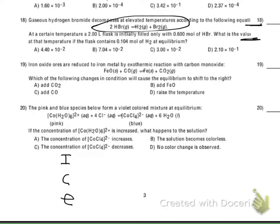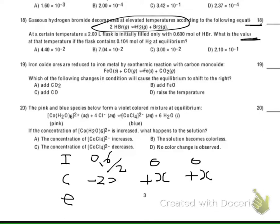At the beginning: HBr concentration = 0.6 mol / 2 L = 0.3 M, and 0 for both hydrogen and bromine. The molar ratio is 2 moles HBr : 1 mole H₂ : 1 mole Br₂. So the change for products is +X for H₂ and +X for Br₂, and the change for the reactant is −2X.